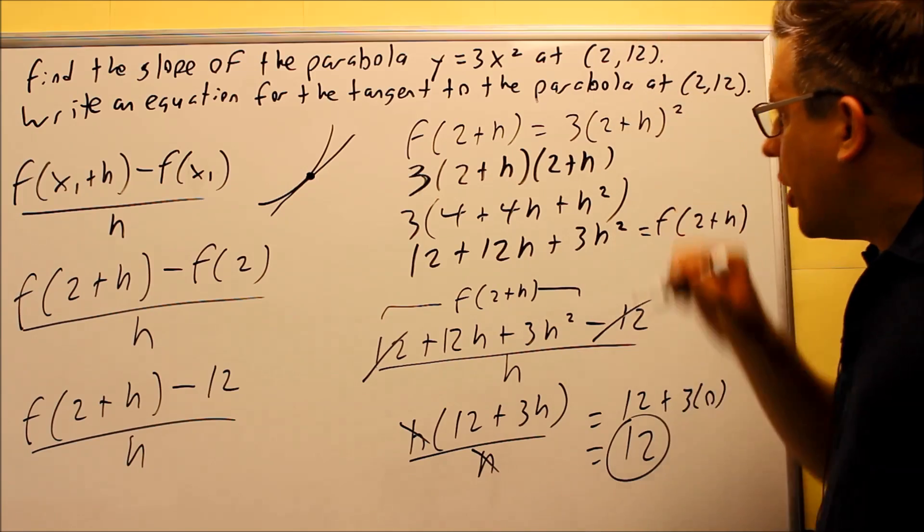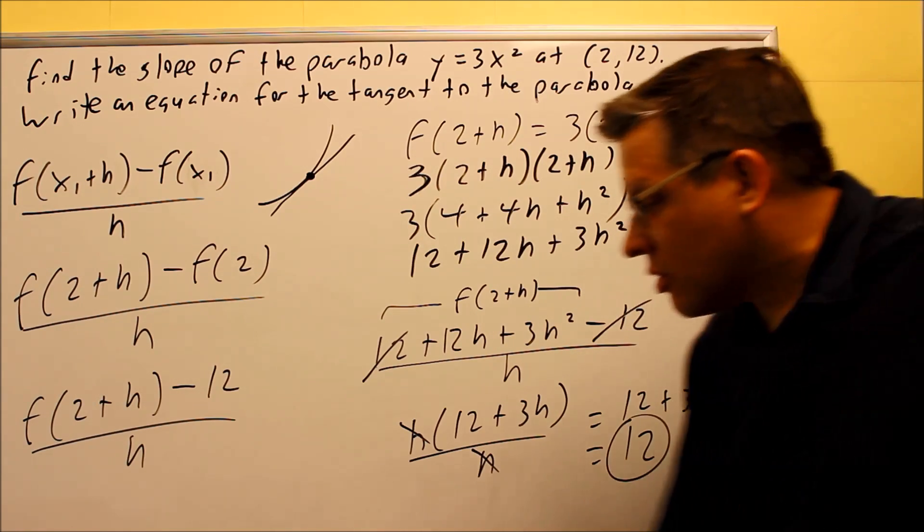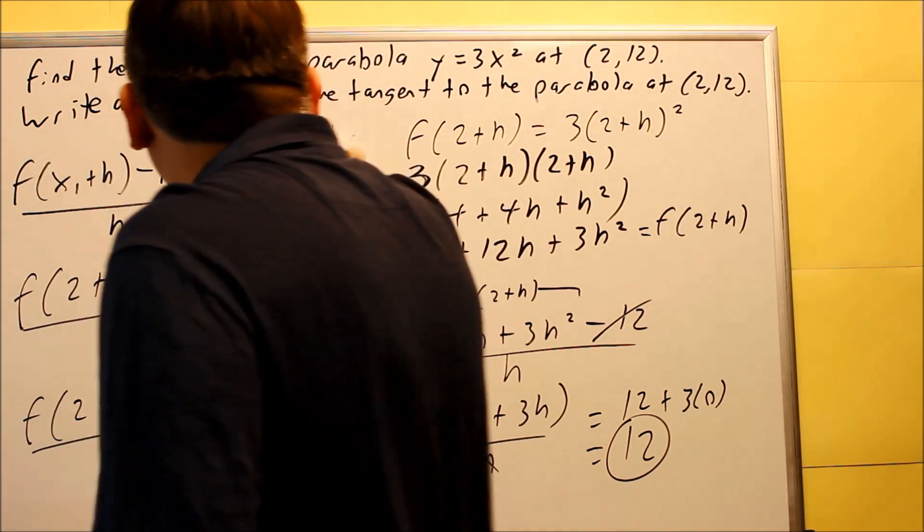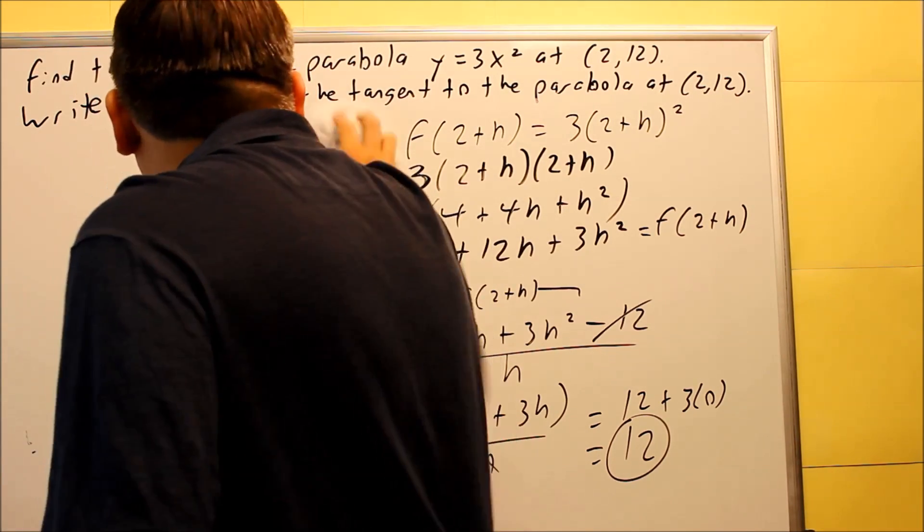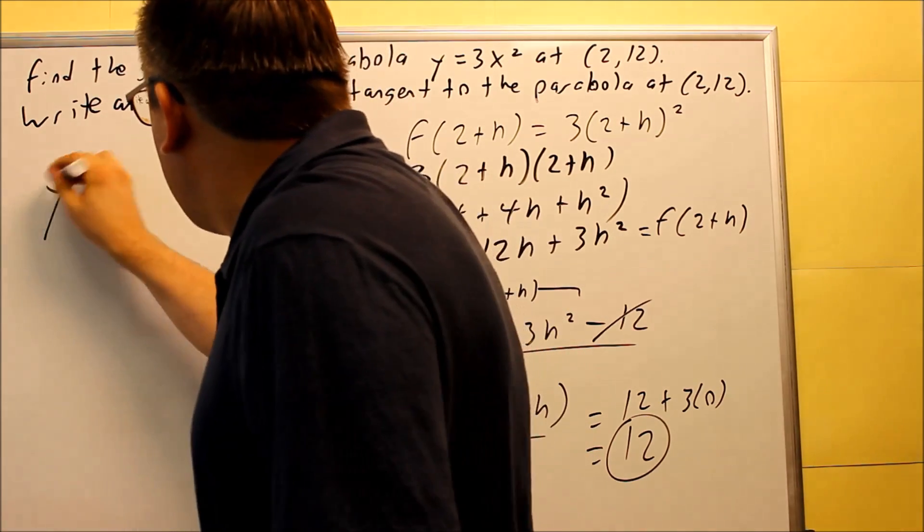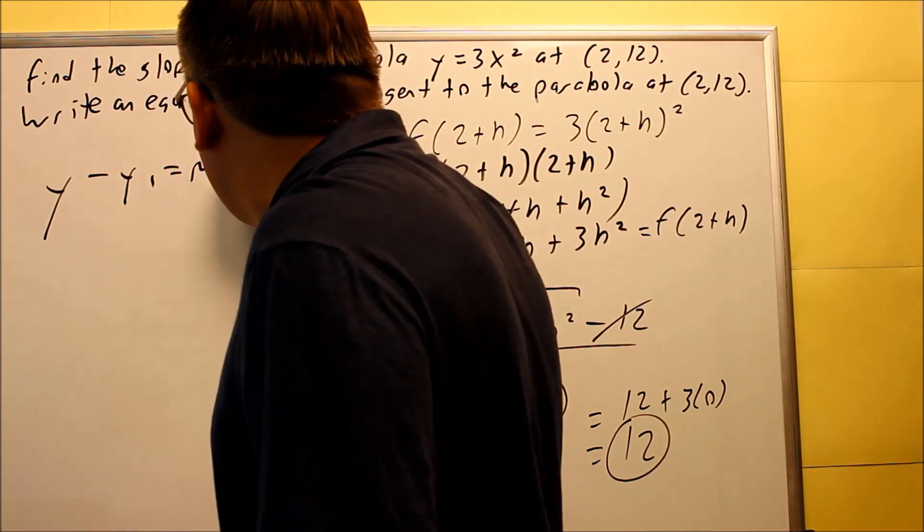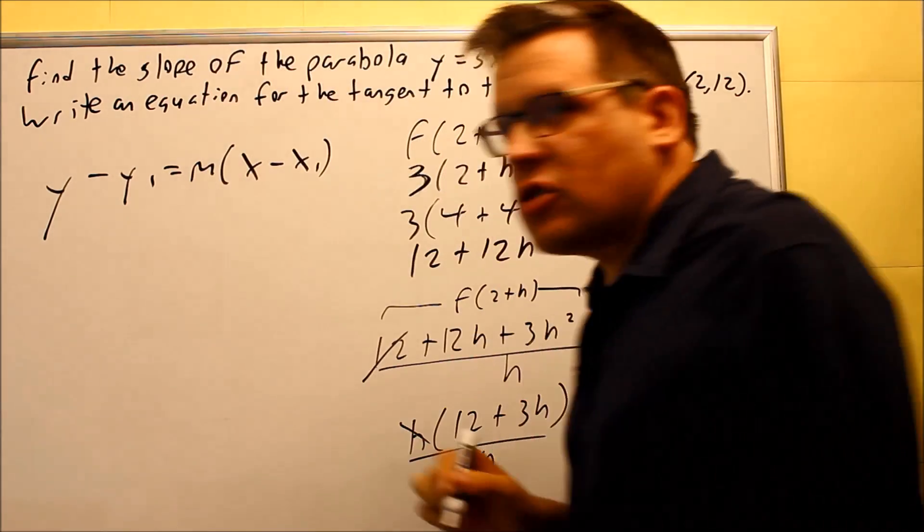And we have a point, 2, 12, you want to use the point-slope formula. So in case you don't remember that one, I'll put that one on the board here. You're going to do y minus y1 equals m times x minus x1. That's the point-slope formula that you want to use on this problem.